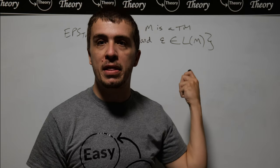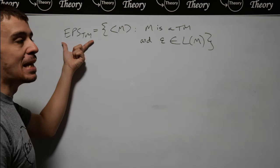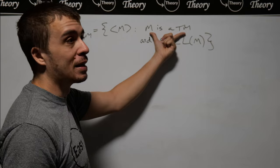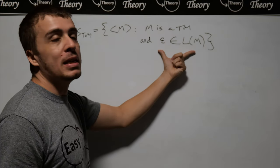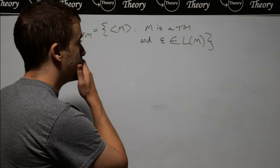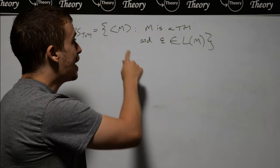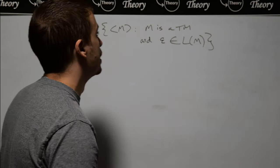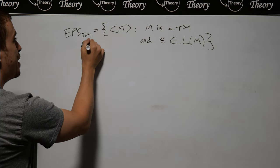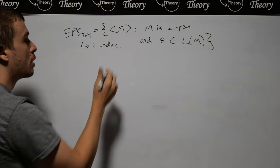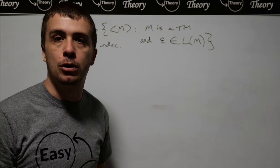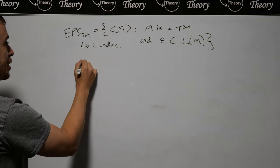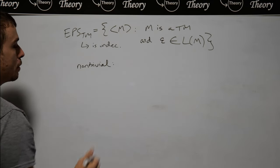I want to apply Rice's theorem to this language, which I'm calling EPSTM — the set of Turing machine descriptions where the Turing machine accepts the empty string. So if I feed an empty string to any one of these Turing machines, eventually it's going to accept. I want to show that this is undecidable. You can apply a reduction from the acceptance problem for Turing machines to this, but I want to do a proof via Rice's theorem. We need to show that it's a non-trivial property of Turing machine languages.